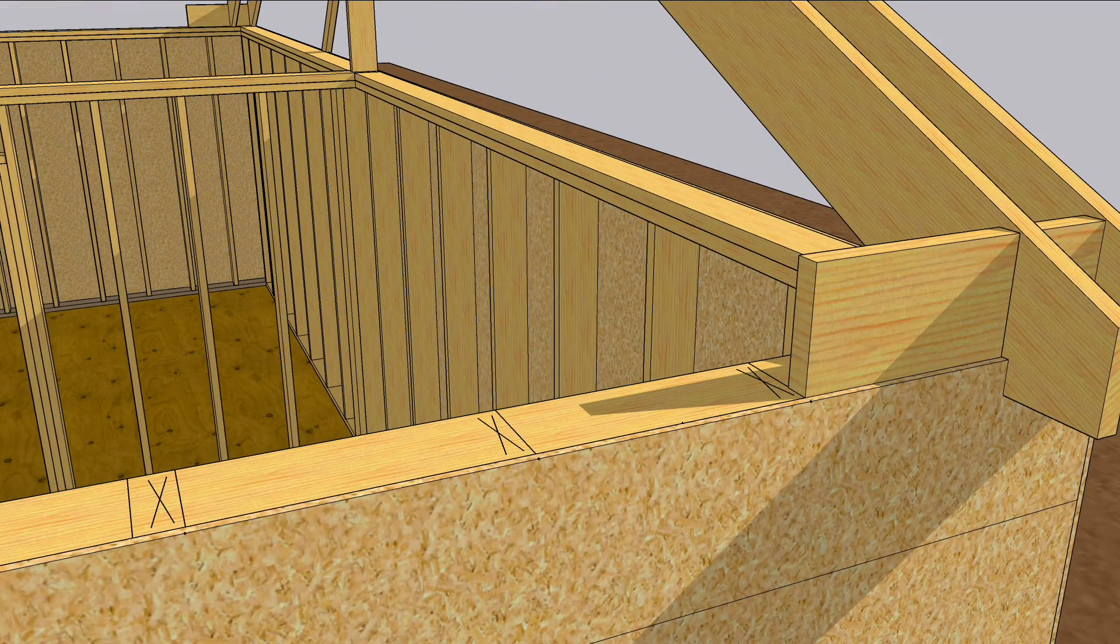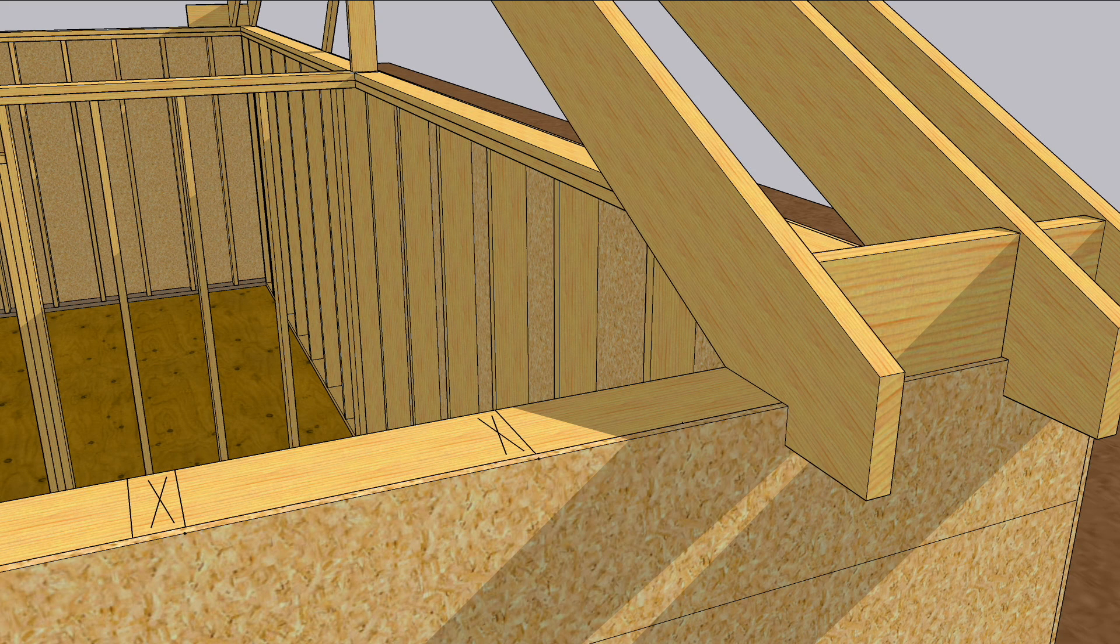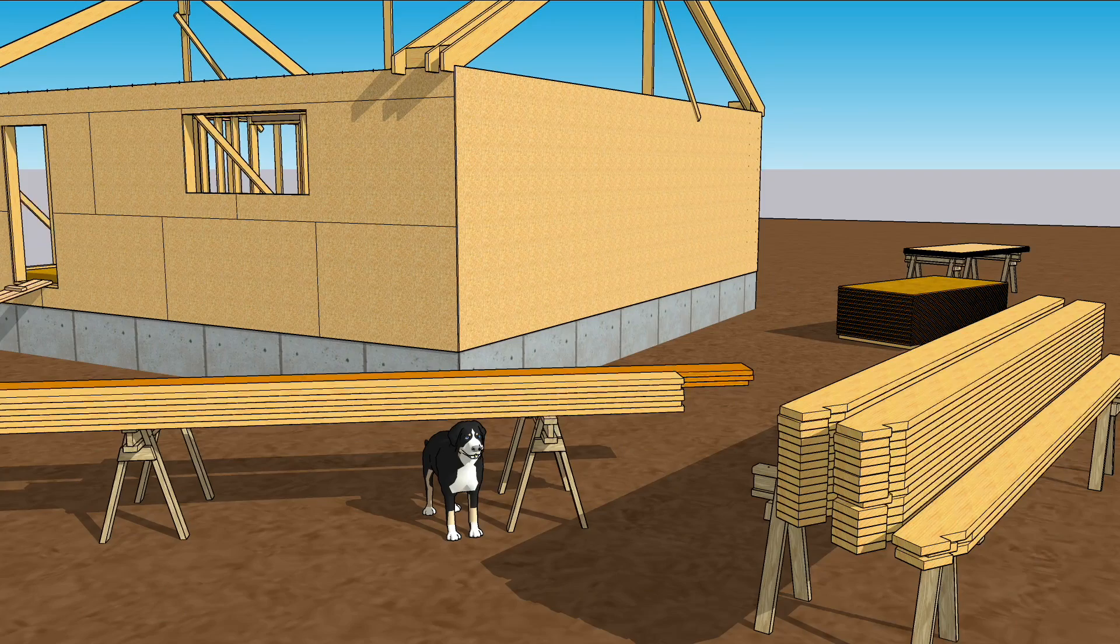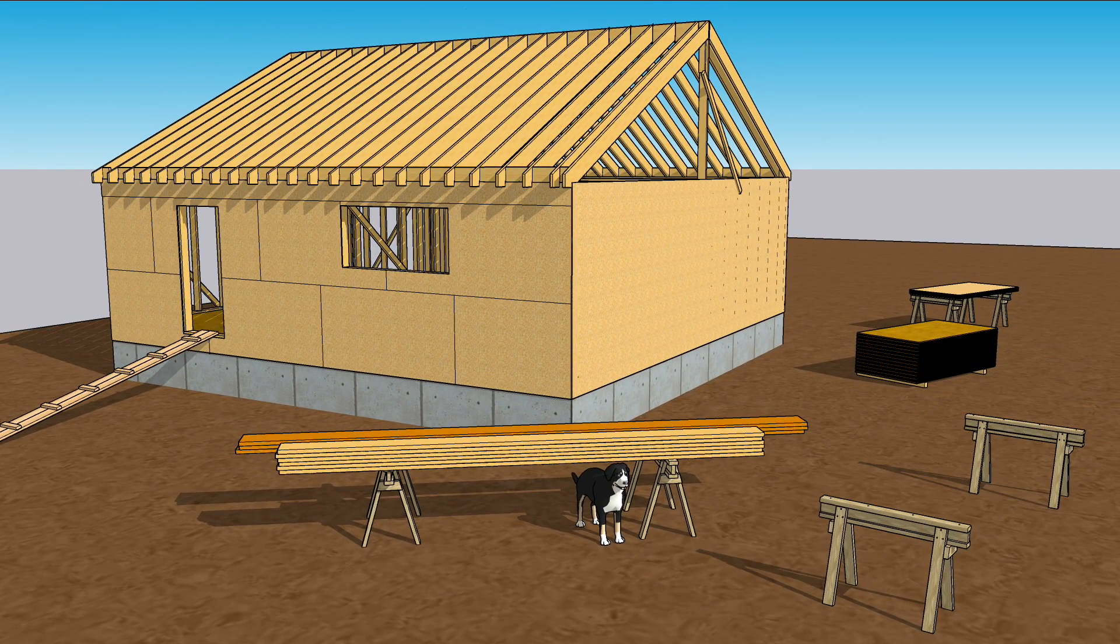After setting a rafter, place a 14 and a half inch block against it, sitting right down tight on the layout line. Set the next rafter, face nailing into the block and toe nailing into the plate. Keep doing that until all of the rafters stacked on your horses are nailed in place.